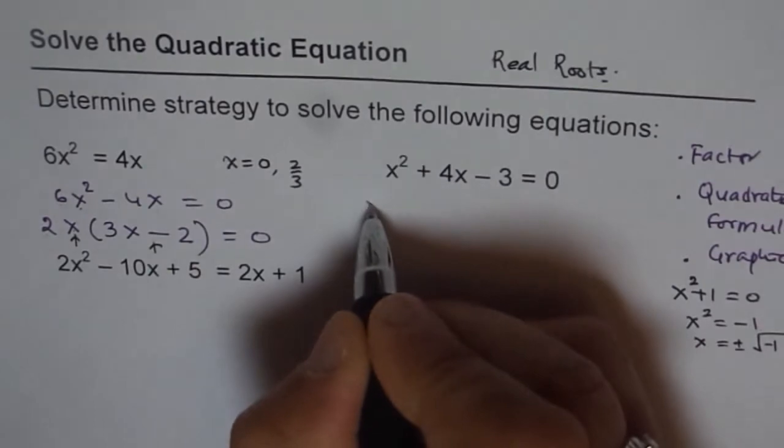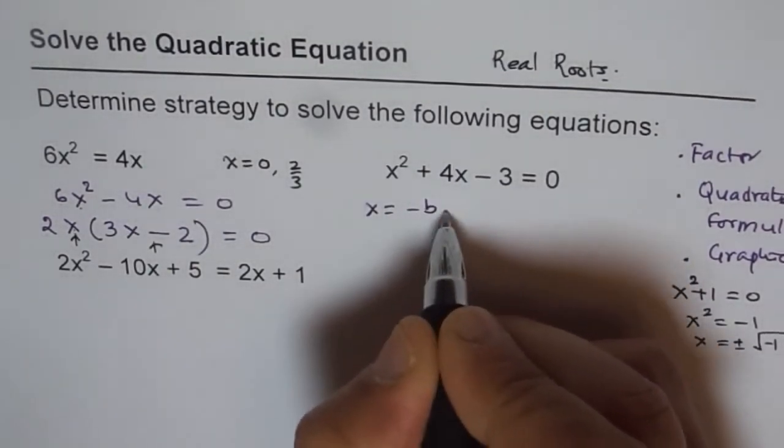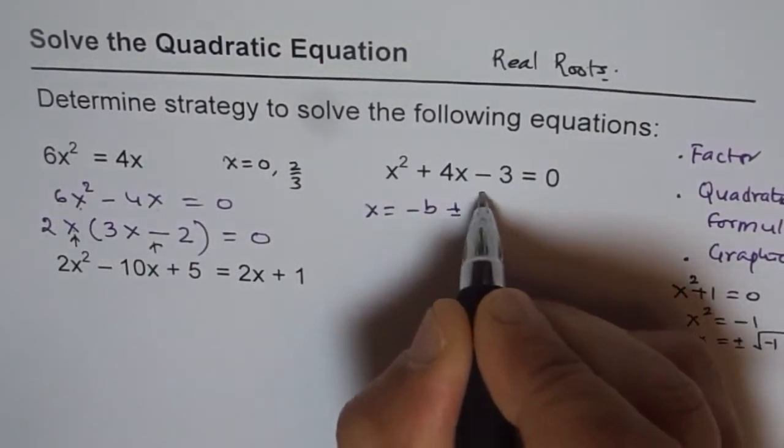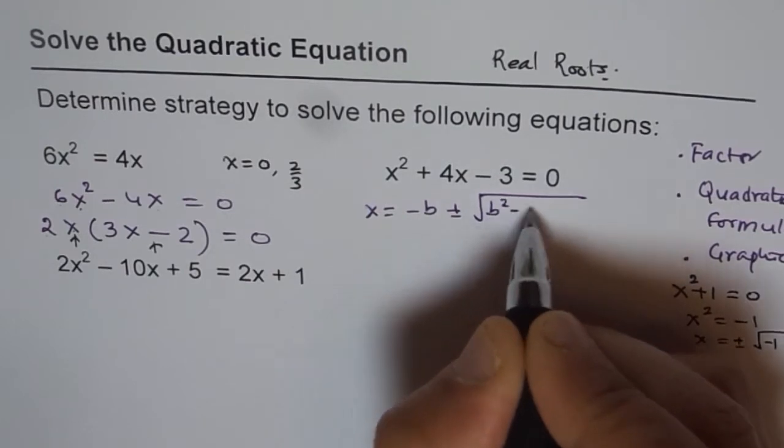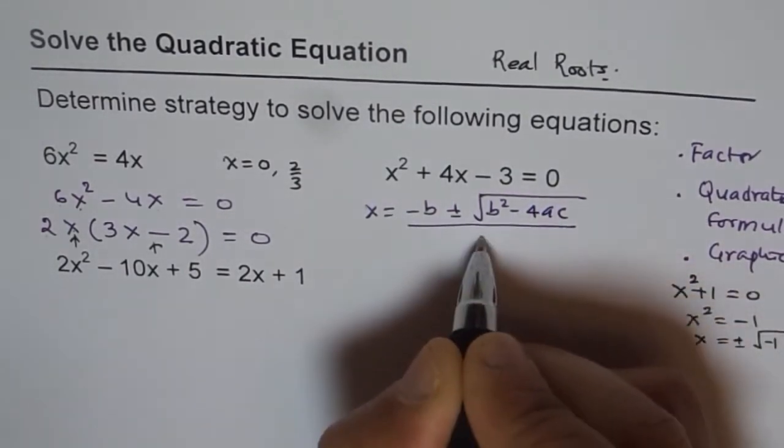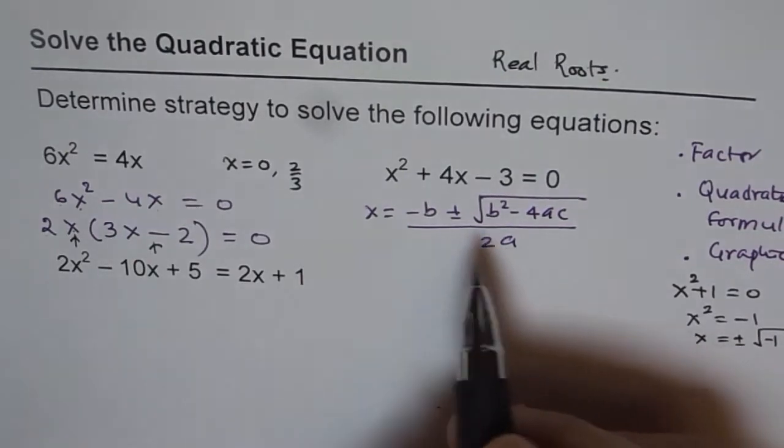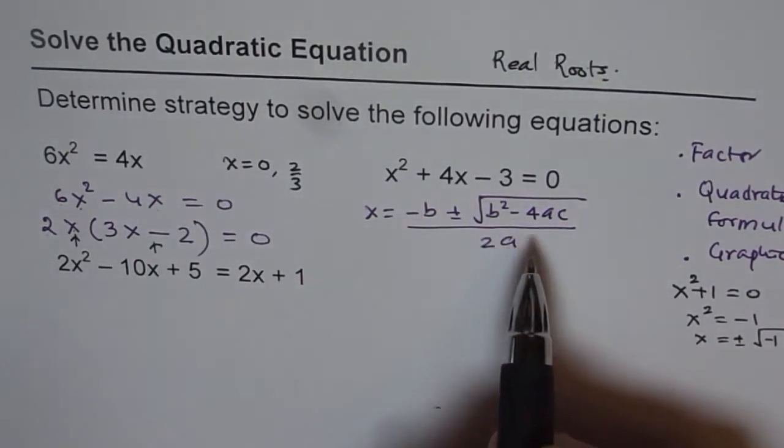Now, quadratic formula is x = (-b ± √(b² - 4ac)) / 2a. Now, in this, what is a, b, and c?